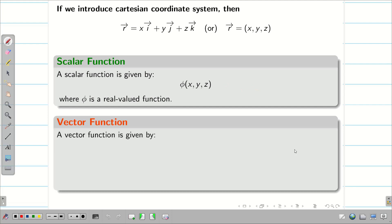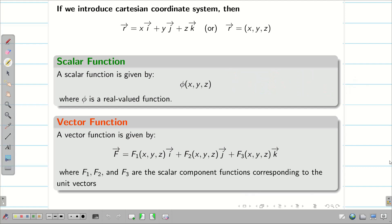Next, vector function. A vector function is given by f vector. My f vector is going to be f1 i vector plus f2 j vector plus f3 k vector, where f1, f2, f3 are the scalar component functions corresponding to the unit vectors i, j and k.